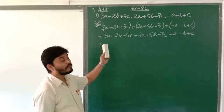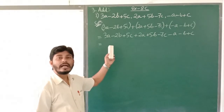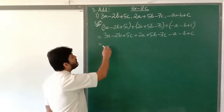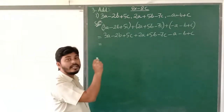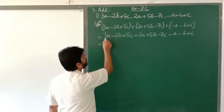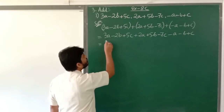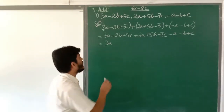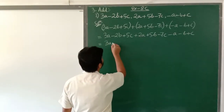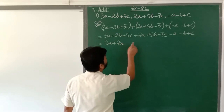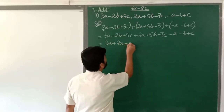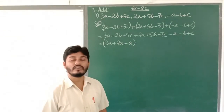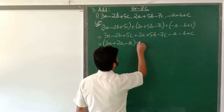Now we have to use the concept of like and unlike terms from our previous class. We have to look for the like terms. First the term is 3a, so now look for the terms containing the variable a. We see plus 2a, and again there is minus a. Put them inside a bracket since they are all like terms.